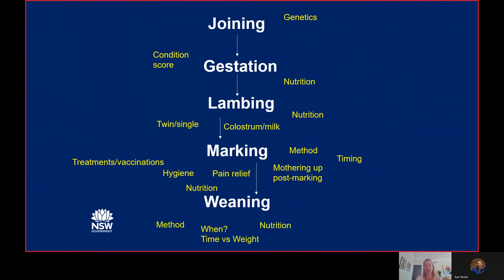And then finally we get to weaning. The method of how you wean, when you wean, and how heavy or old those lambs are will all influence success and their nutrition post-weaning. Disease is like the icing on the cake — a lot has happened in the lead-up, and when a vet gets called to look at disease, there are an awful lot of underlying factors that will have influenced that. Every enterprise will be different; there's no one recipe, and every producer will take something different away. There'll be a little nugget of gold in here for everybody of something they can do to make a difference.